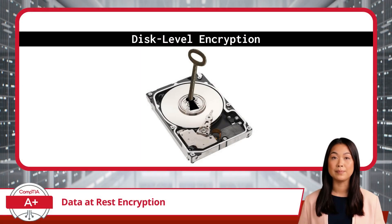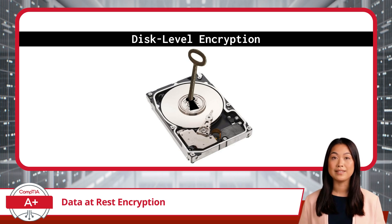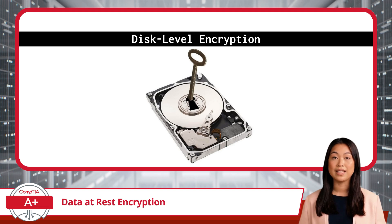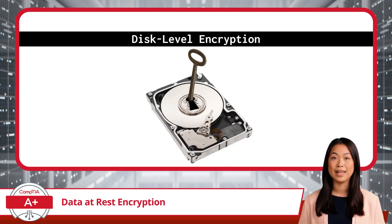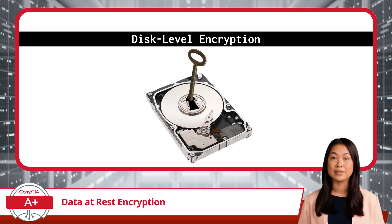While file-level encryption protects specific files or folders, disk-level encryption, also known as full-disk encryption, offers a more comprehensive solution. Think of disk-level encryption as a protective shield that covers the entire storage device, whether it's your computer's hard drive or an external disk. If your goal is to protect everything on your device, from system files to personal data, disk-level encryption is the ideal choice. Consider the example of a stolen laptop — laptops are prime targets for theft, and often the true value for the thief isn't the device itself, it's the data stored inside, which could include personal photos, sensitive business documents, or financial information.